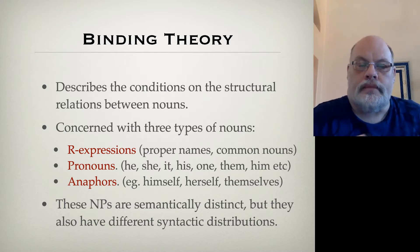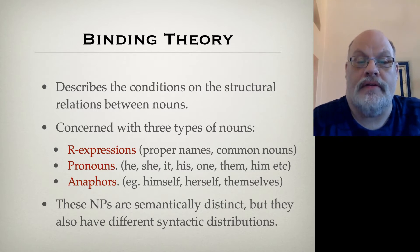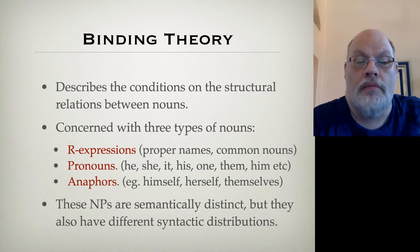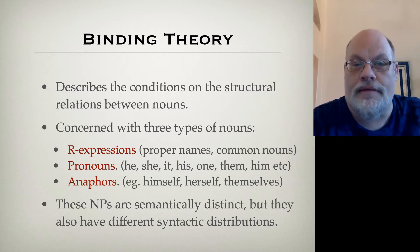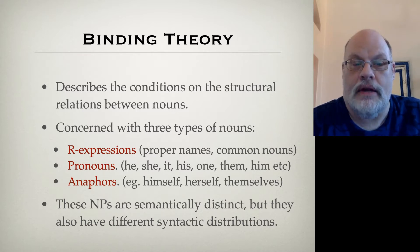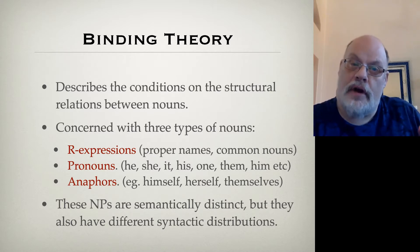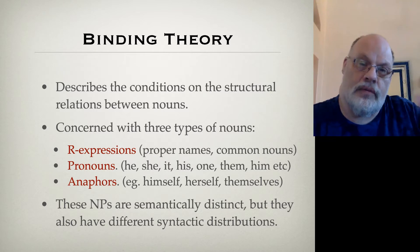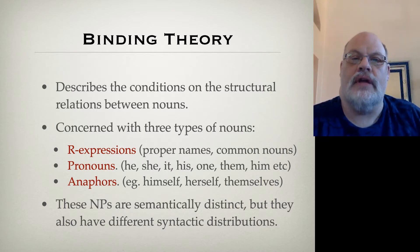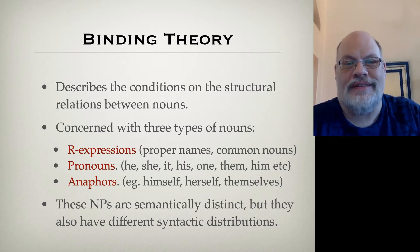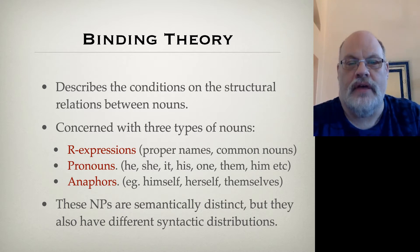We are going to talk about a kind of noun phrase known as an R expression, which includes proper names and common nouns. Pronouns — things like he, she, it, his. And anaphors — words that end in 'self', for example, in English. These noun phrases are semantically distinct, and we'll find that they also have distinct syntactic distributions — they appear in different syntactic positions.